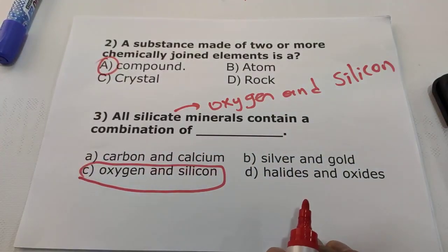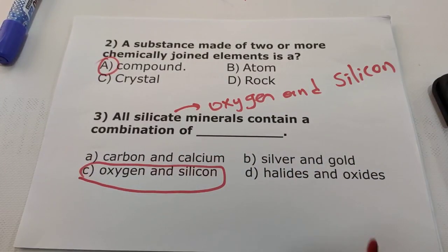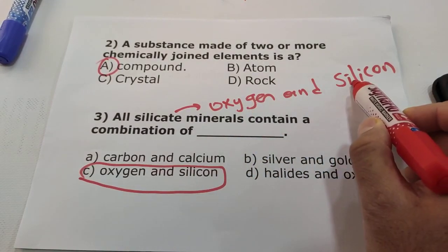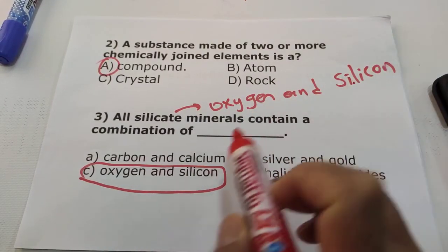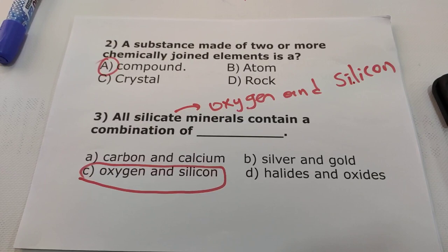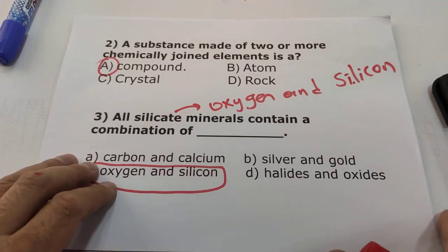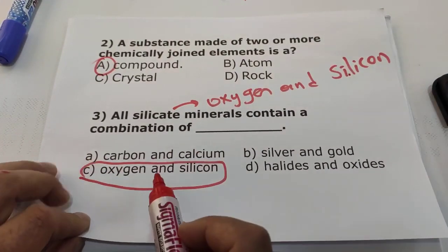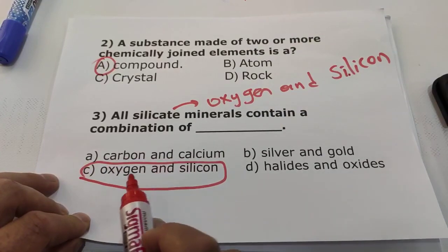Question three: all silicate minerals contain a combination of oxygen and silicon. As you remember, there are two groups of minerals — silicate minerals and non-silicate minerals. Silicate minerals contain oxygen and silicon elements; non-silicate minerals do not contain oxygen and silicon. So the answer for question three will be C — oxygen and silicon.